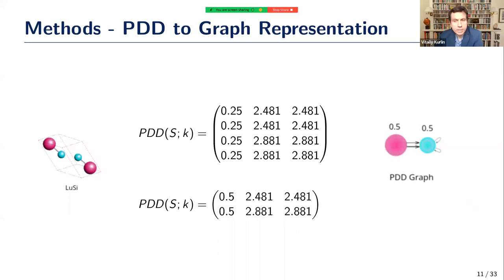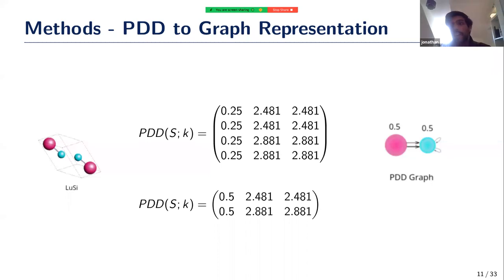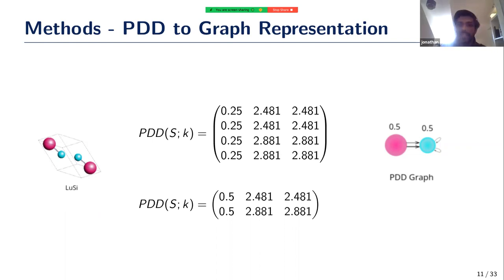On the question of what happens if two neighbors are at the exact same distance: they are arbitrarily chosen. Empirically this has not been found to be a problem, and if a tie does occur it is typically the same atom type, so it doesn't affect things in any meaningful way.